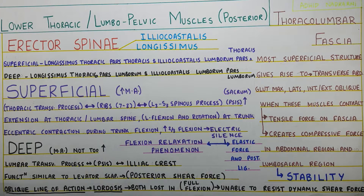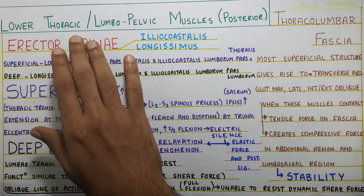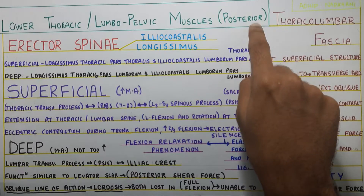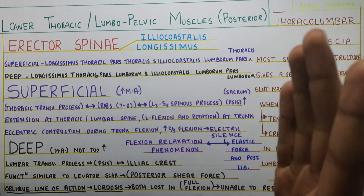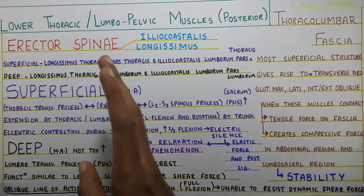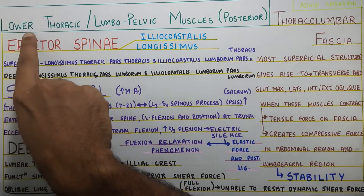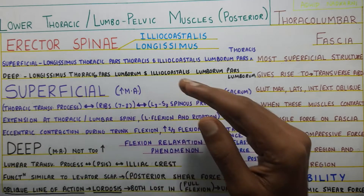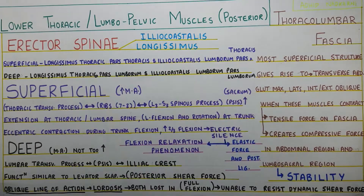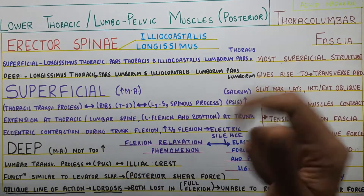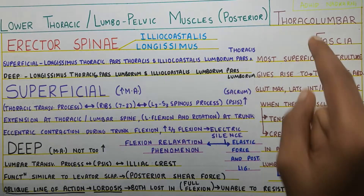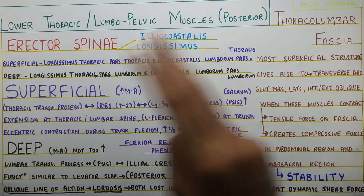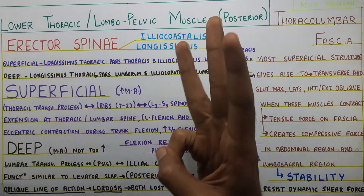In this video we are going to talk about the lower thoracic and lumbopelvic muscles — that is the posterior muscles. The previous video was about the cervical and upper thoracic muscles, where you may have noticed the attachments were coming from the upper thoracic region. In this topic we will discuss the thoracolumbar fascia, which we have already touched upon, then the erector spinae and the multifidus.